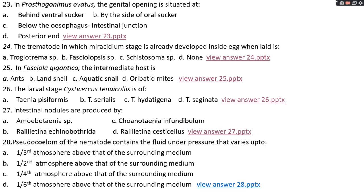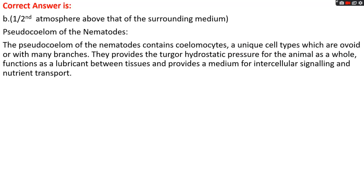Question number twenty-eight: the pseudocoelom of the nematode contains fluid under pressure that varies up to options A, one third atmosphere above the surrounding medium; options B, one half atmosphere above the surrounding medium; option C, one fourth atmosphere; options D, one sixth atmosphere. The right answer is option B, one half atmosphere above the surrounding medium. The pseudocoelom of nematodes contains pseudocoelocyte cells — unique, obovoid and branched — that provide turgor hydrostatic pressure for the animal and function as lubricant between tissues, a medium for intercellular signaling, and nutrient transport. Pseudocoelom is a specific character of nematodes.